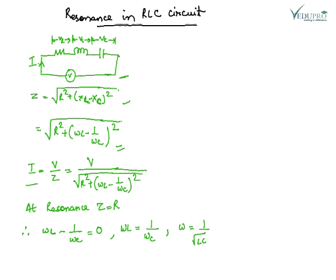I is V upon Z, and at resonance we know that Z is equal to R. So the inductive and capacitive reactance term will be zero. So from this we get omega is equal to 1 upon root LC.